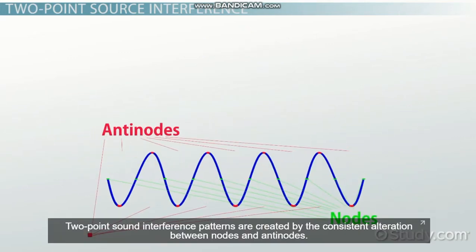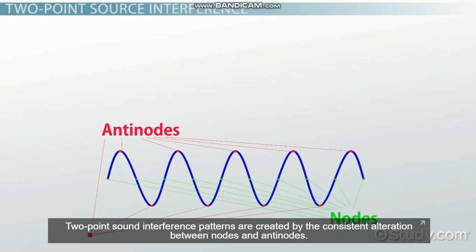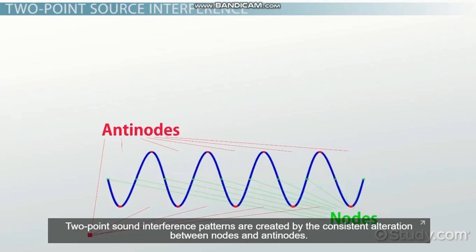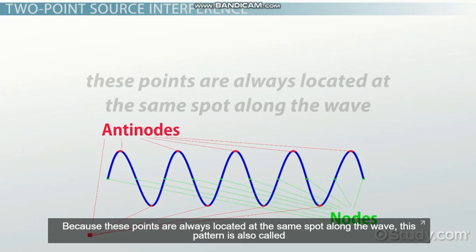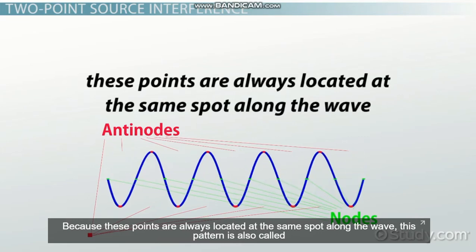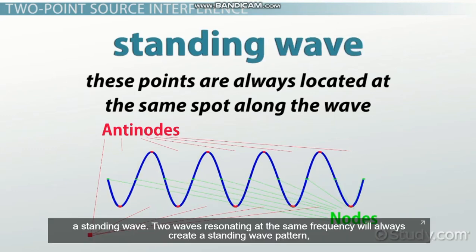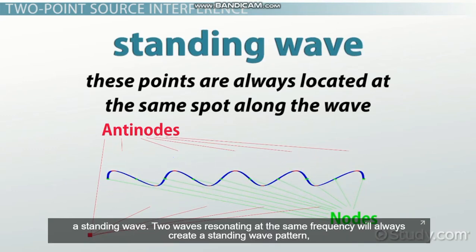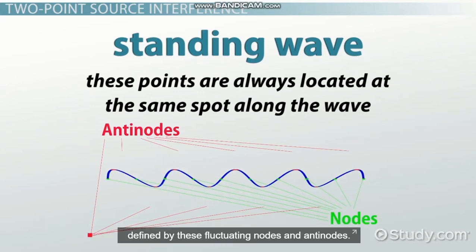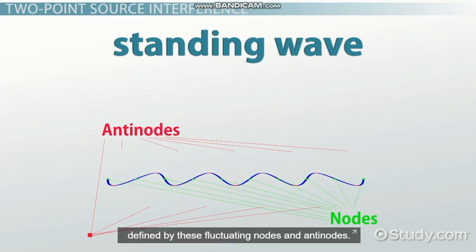Two-point sound interference patterns are created by the consistent alternation between nodes and antinodes. Because these points are always located at the same spot along the wave, this pattern is also called a standing wave. Two waves resonating at the same frequency will always create a standing wave pattern defined by these fluctuating nodes and antinodes.